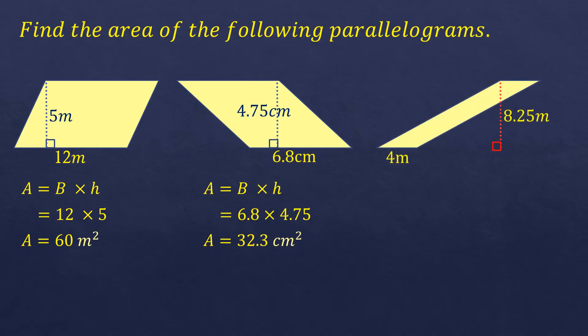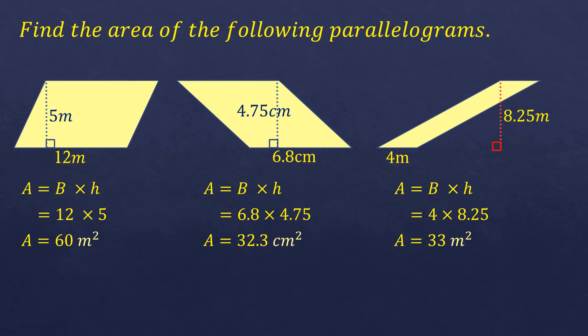Another parallelogram with a base of 4 meters and a height of 8.25 meters. Using the formula base times height, 4 times 8.25 is 33 square meters. Note that sometimes the given uses the term altitude instead of height, but it means the same thing.